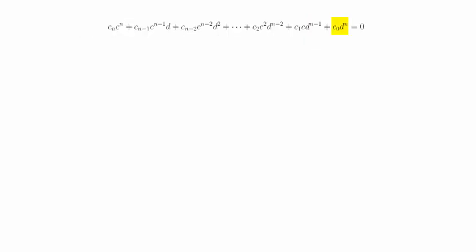We will start by isolating the last term in the sum by moving everything else to the other side of the equation. Notice that we factored out a negative c from the right hand side of the equation.